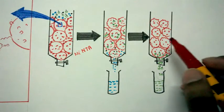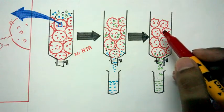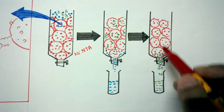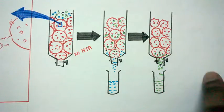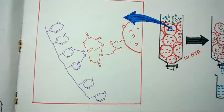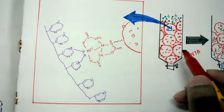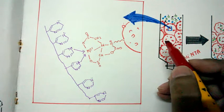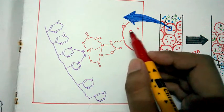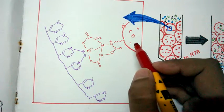Next we would use a particular type of elution buffer by which we can elute our protein and thus we would get our purified protein. Now let's zoom into these affinity beads.